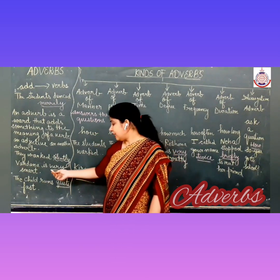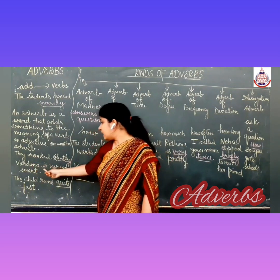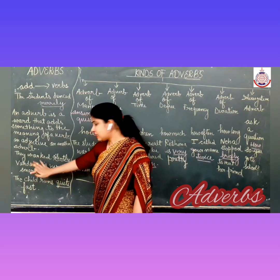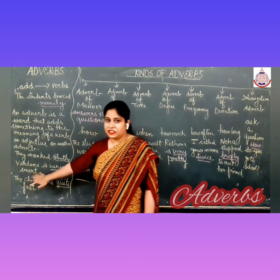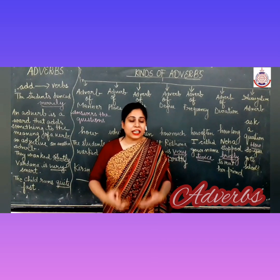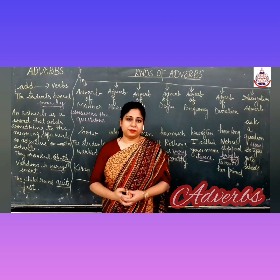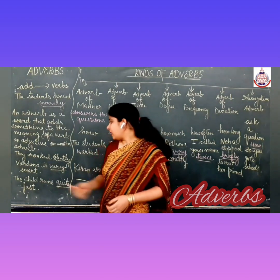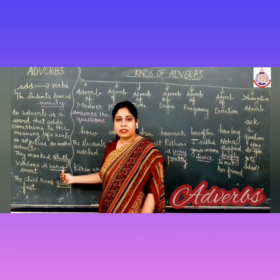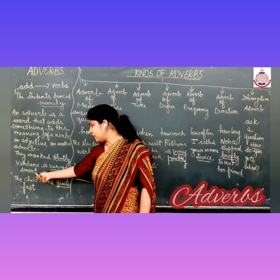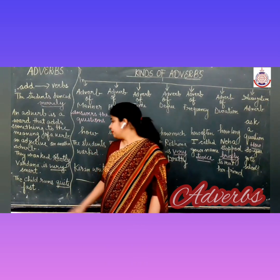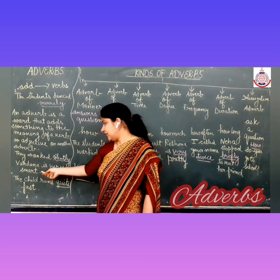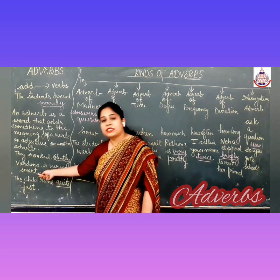Now let us see the next example. Vandana is very smart. Here smart is an adjective — adjectives modify nouns, adjectives add to the meaning of a noun. Vandana is very smart — very is the adverb, because here it is modifying the adjective. So in the first sentence, adverb modified the verb 'worked', and in the second sentence, adverb modified the word 'smart', which is an adjective.